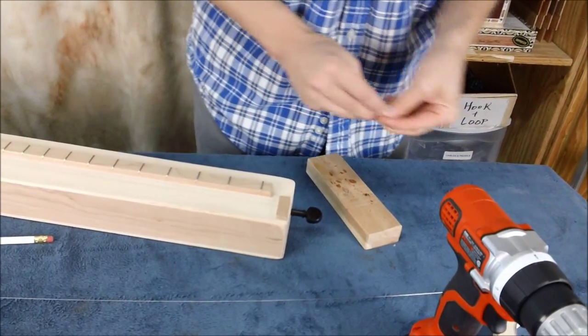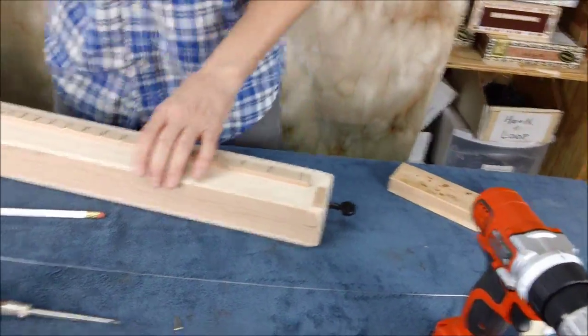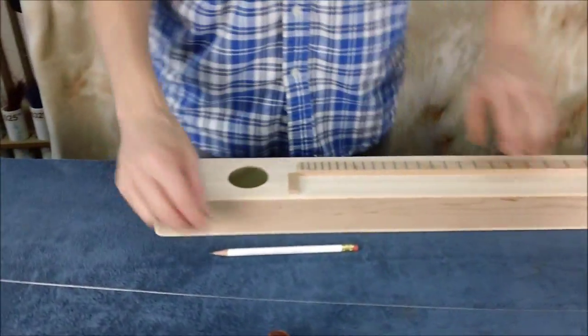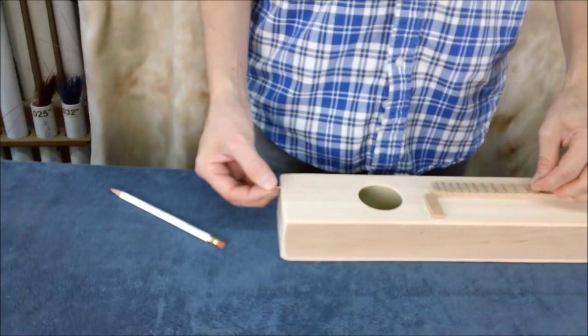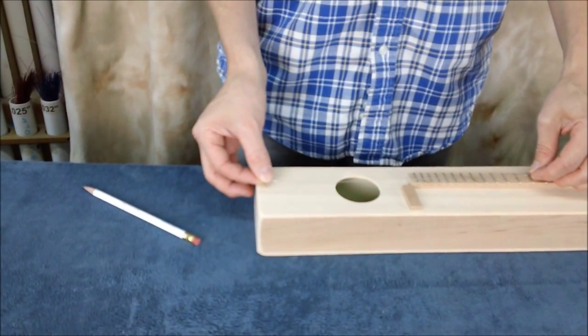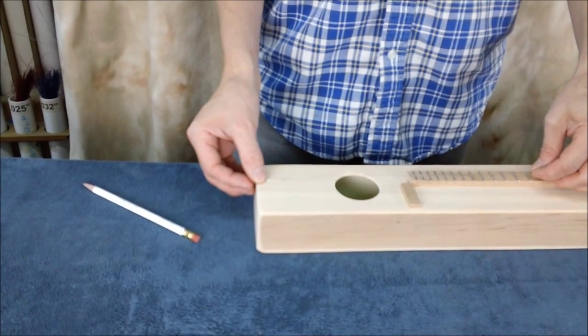And then we need to put our tail pin in. The tail pin will go down here. And the idea is that the string will run more or less down the center of the fingerboard, so we want to locate our tail pin to be like that.